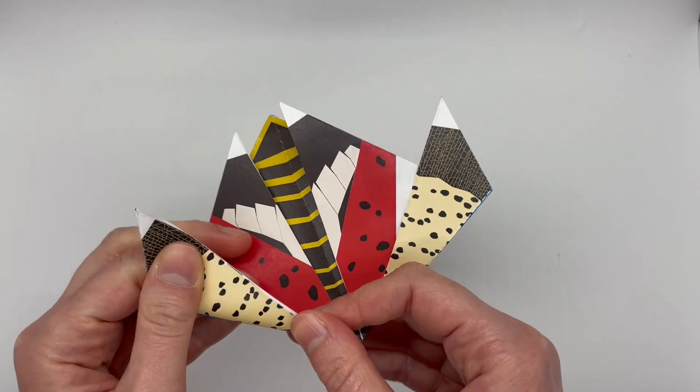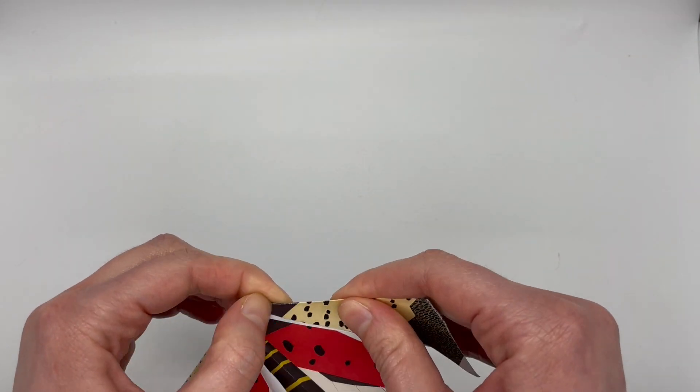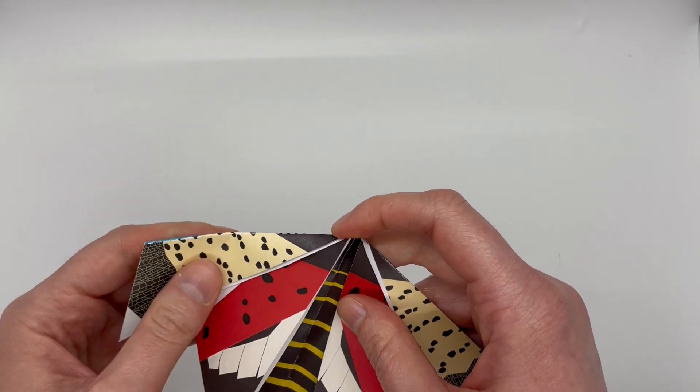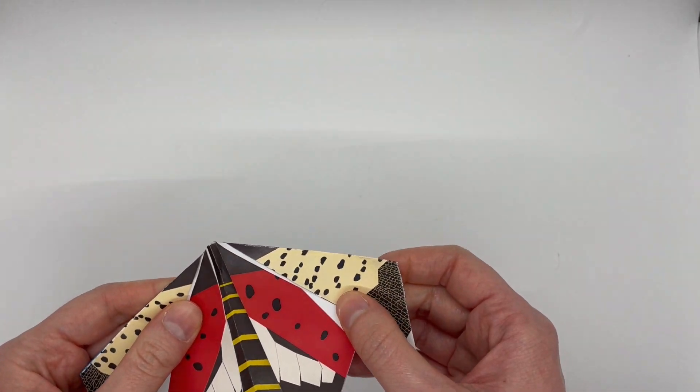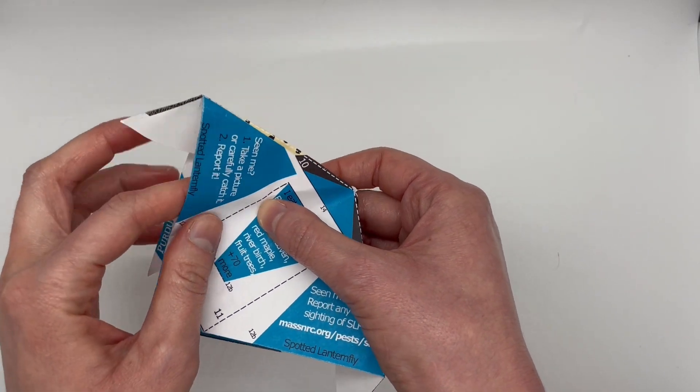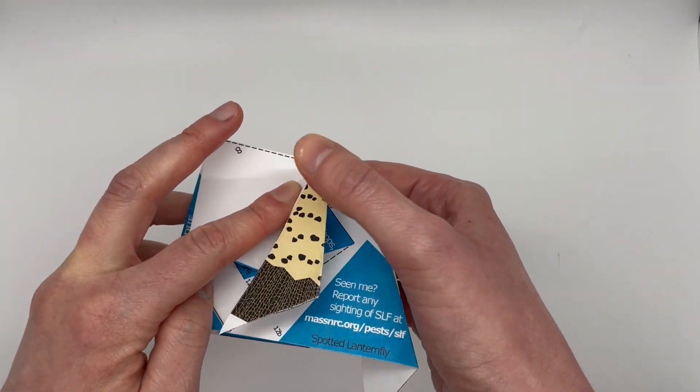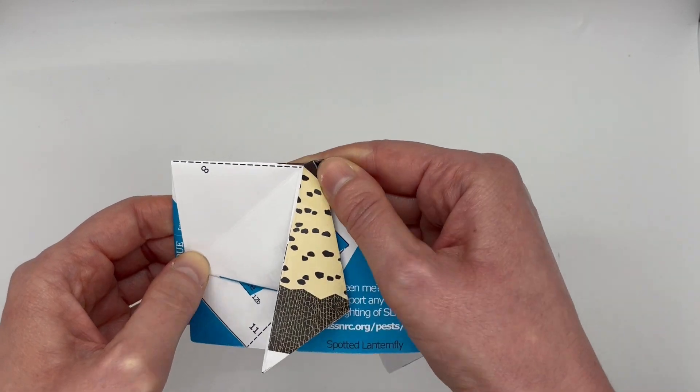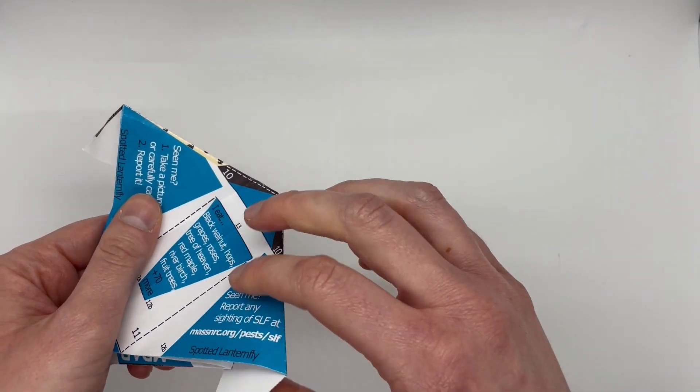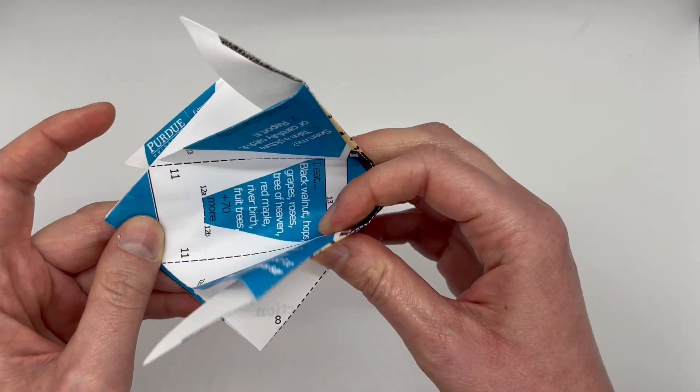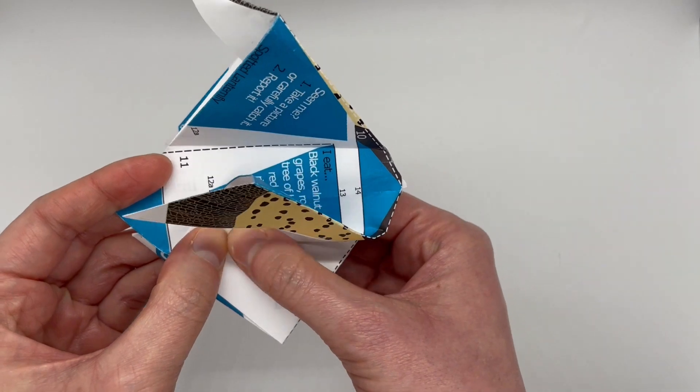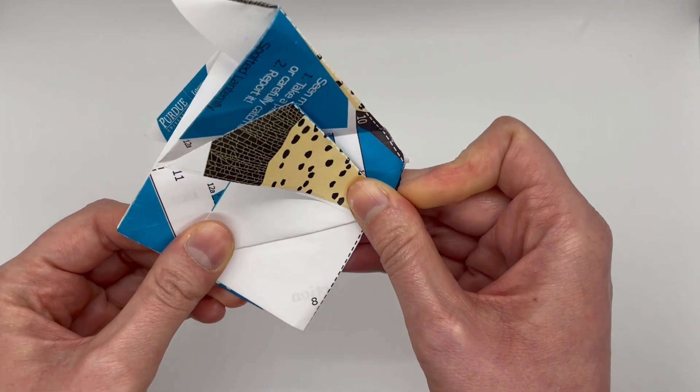11. In Massachusetts, spotted lanternflies usually start laying their eggs in mid-September. They'll lay them on just about anything that's outside. Cars, trees, furniture, grills, railings, you name it.